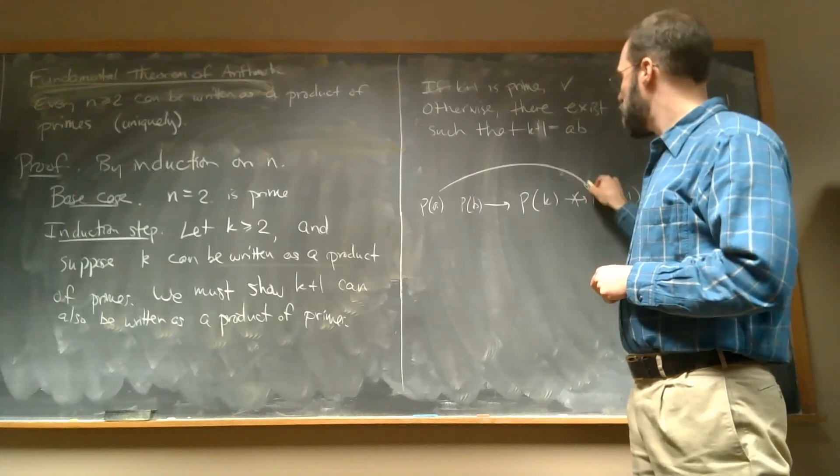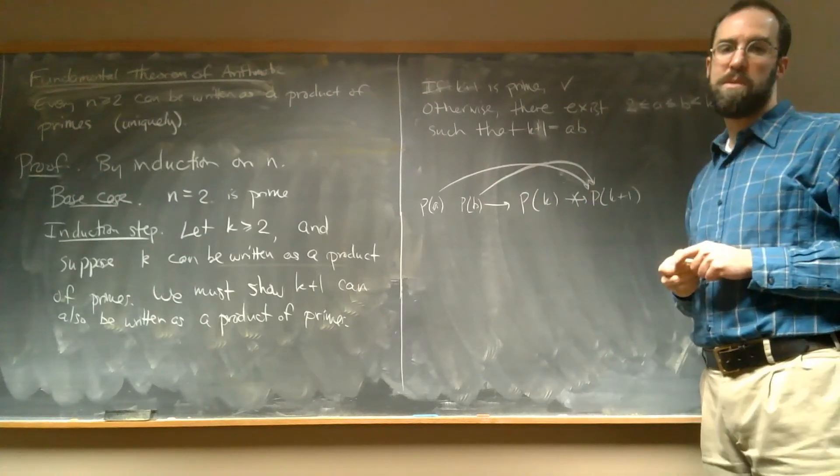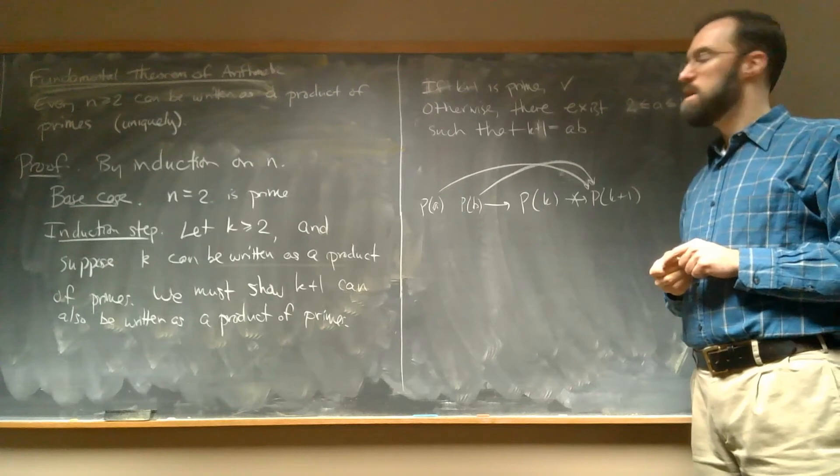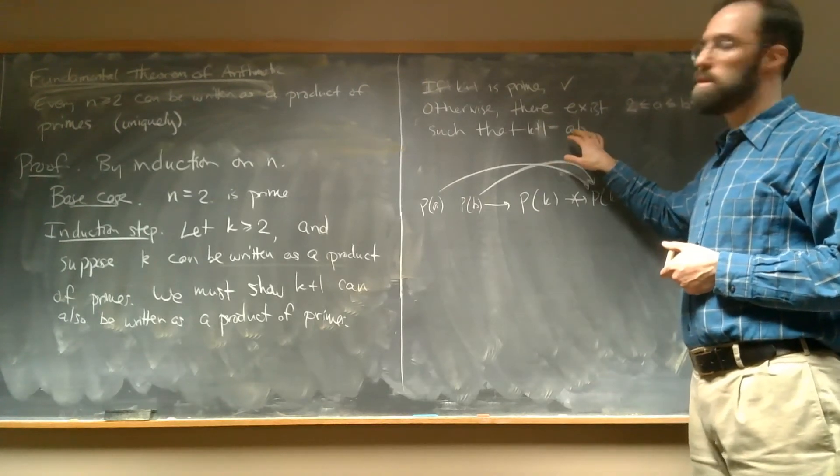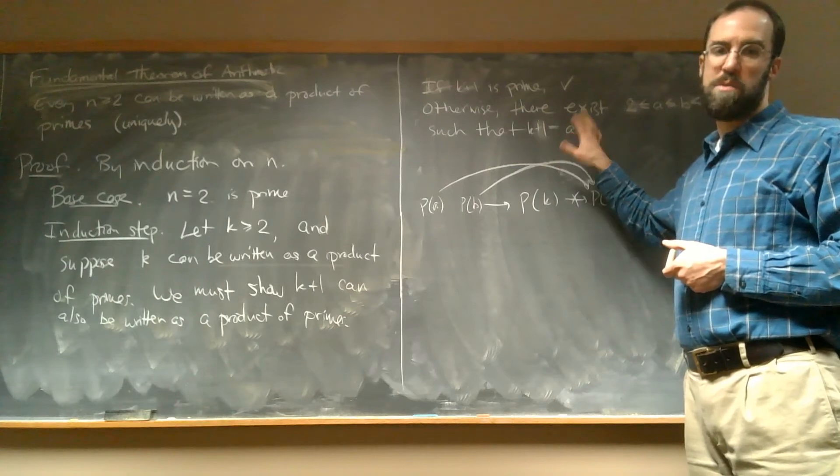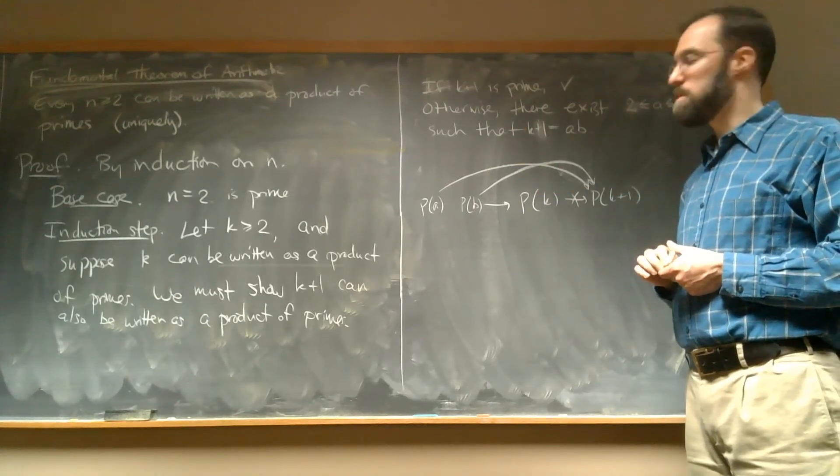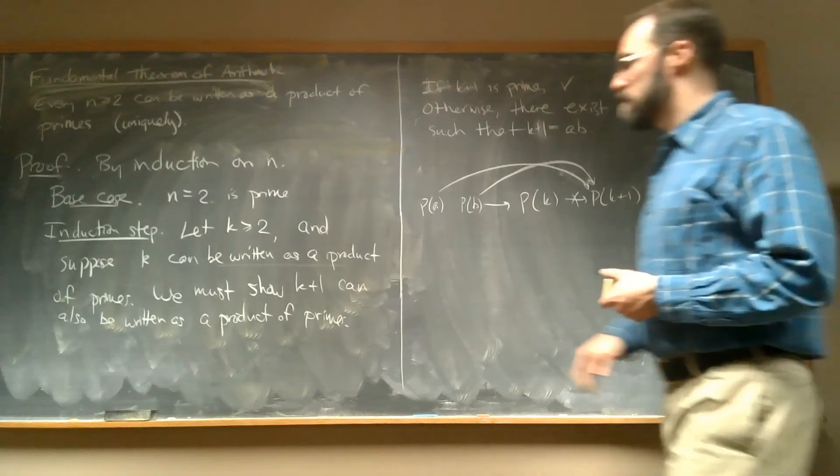Right, we're in a situation where we have this P, where we have an A and B somewhere back here. And those things together are going to imply something about K plus 1. Okay, so we need, this is where we need this strong induction, because we need to assume something about this A and B, which might not be the immediately previous number before K plus 1. So, let's redo this.